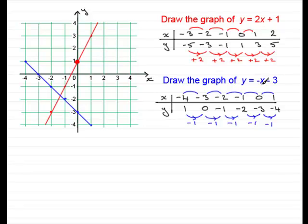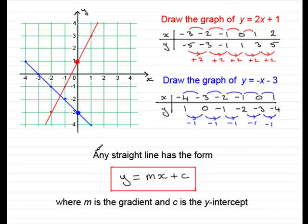And that's what we've got in front of the x again — minus 1x. When we look at the number on the end, that is the y value when x is 0. Put x equals 0 in, you get y equals minus 3. That point 0, minus 3 is on the y-axis — the y-intercept. So what this suggests is that any line has the form y equals mx plus c, where m is the gradient and c is the y-intercept.